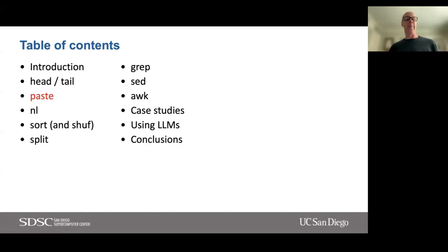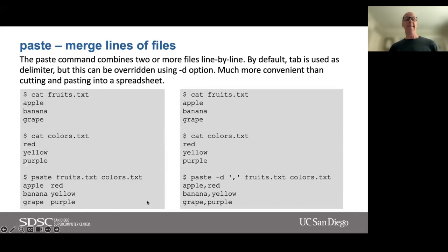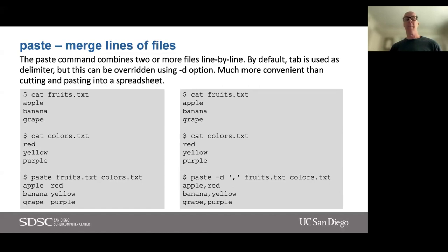The next command I'm going to talk about is paste. I find this one really useful when working with data from multiple files. What paste does is merge the lines of a file — it combines two or more files line by line. By default, a tab is used as the delimiter, but this can be overridden with the -d option. For many years I didn't know about paste, so I would manually take output, paste it into a spreadsheet, and create columns from different files.